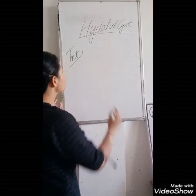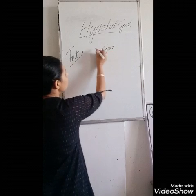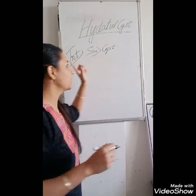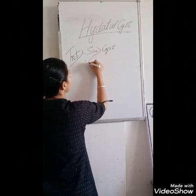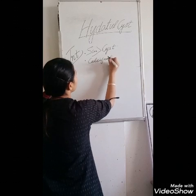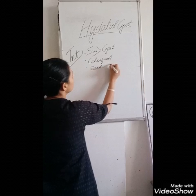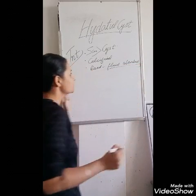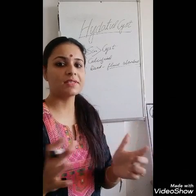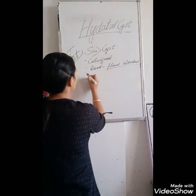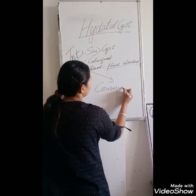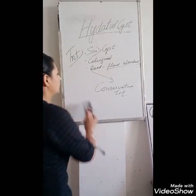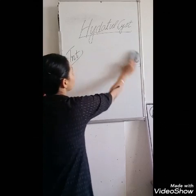In treatment, if the cysts are less than 5 cm, or if they have become calcified, or if the fluid has been absorbed, we will go for conservative treatment — meaning we leave the condition and do not interfere.